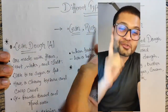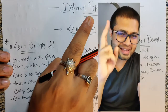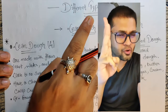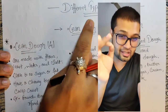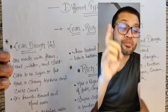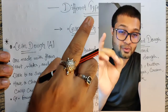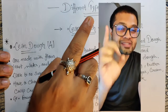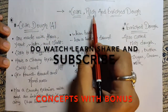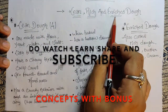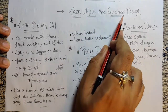Hi everyone, today's video is all about the dough — lean dough, rich dough, and enriched dough. I have also added one important thing which is about dough consistency — good and bad consistency. So let's figure out what those are and start the lesson. These are the three types of dough.